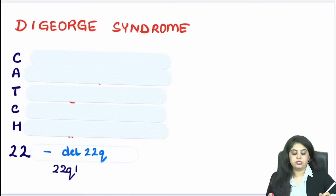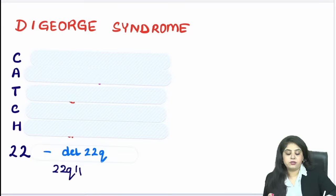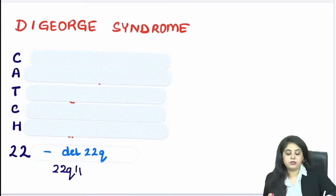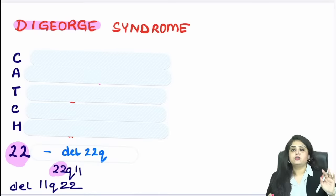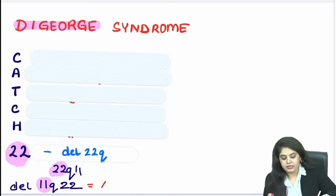For INICET: if it were deletion 11q22, the difference is in the chromosome number. When I say CATCH-22 / DiGeorge syndrome, chromosome number 22 is affected — 22q11. But if I say deletion 11q22, chromosome number 11 is affected, and that happens to be a case of Ataxia telangiectasia. So these are two totally different conditions, and twisting the numbers around makes the difference.